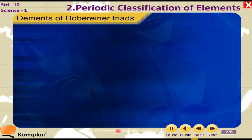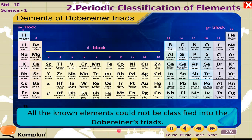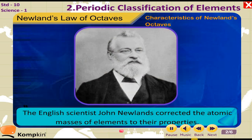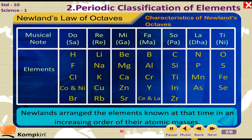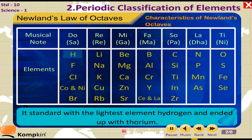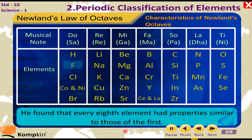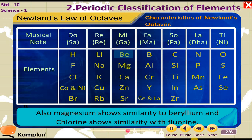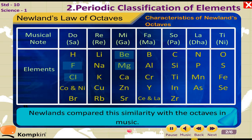Demerits of Döbereiner's Triads: All the known elements could not be classified into Döbereiner's Triads. Newlands' Law of Octaves: The English scientist John Newlands correlated the atomic masses of elements to their properties. Newlands arranged the elements known at that time in increasing order of their atomic masses, starting with the lightest element hydrogen and ending with thorium. He found that every 8th element had properties similar to those of the first. For example, sodium is the 8th element from lithium and both have similar properties. Also, magnesium shows similarity to beryllium and chlorine shows similarity with fluorine.